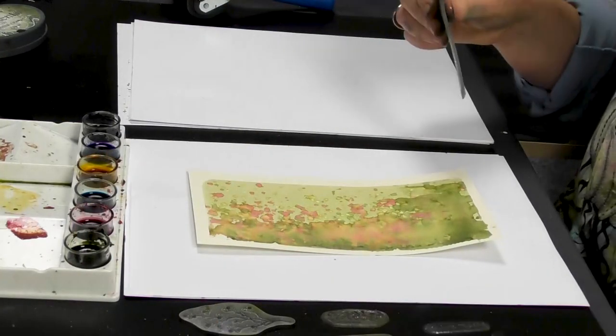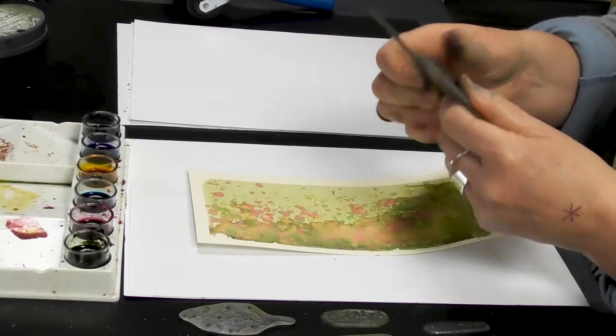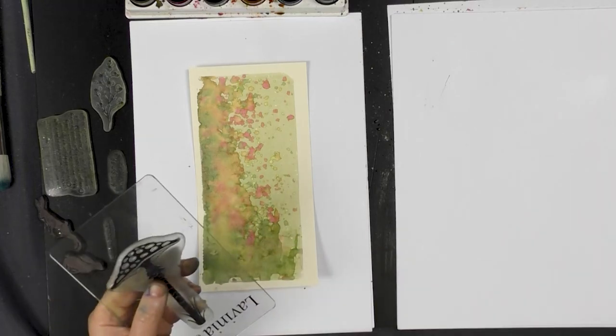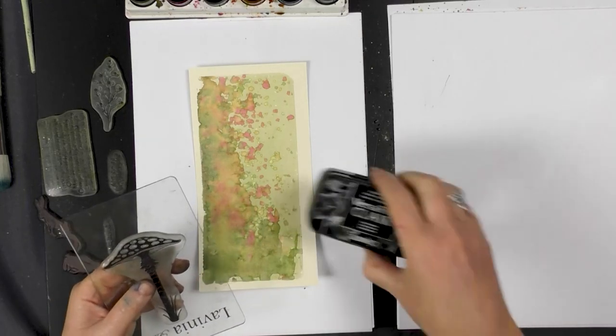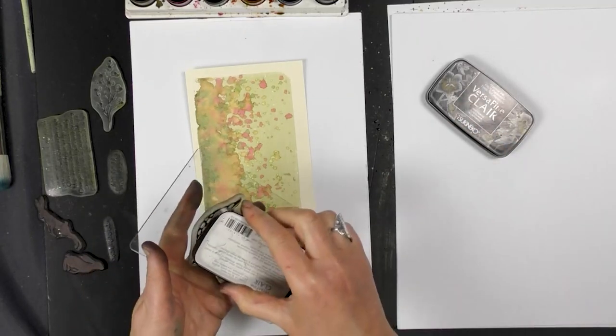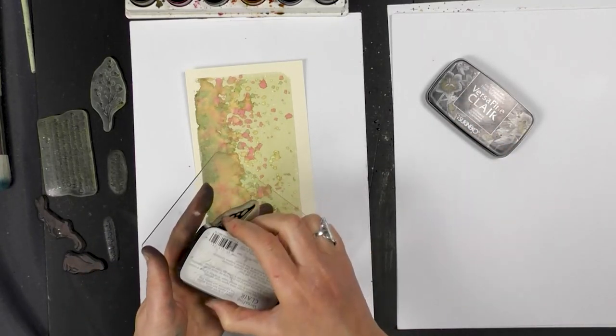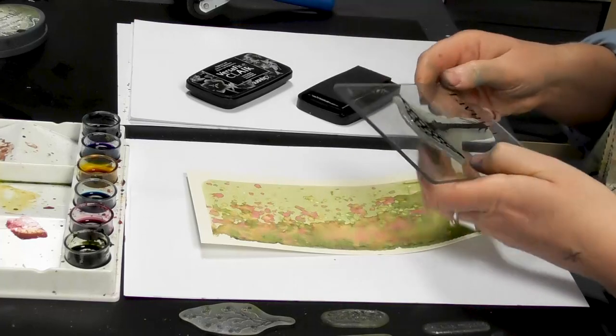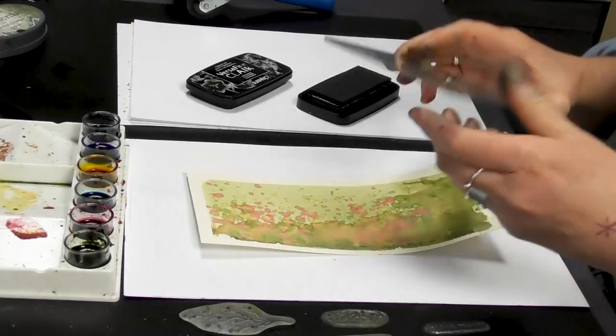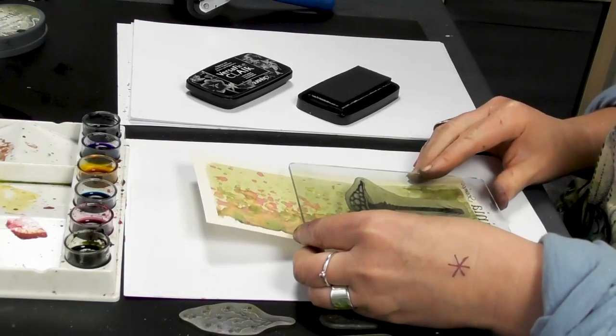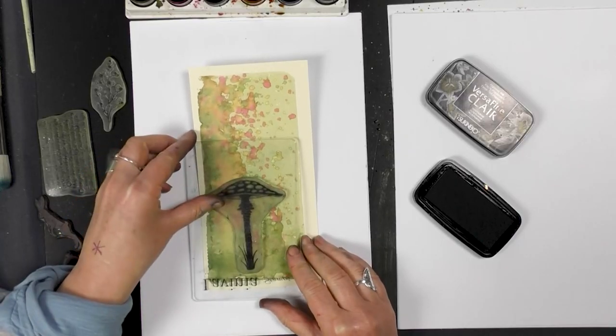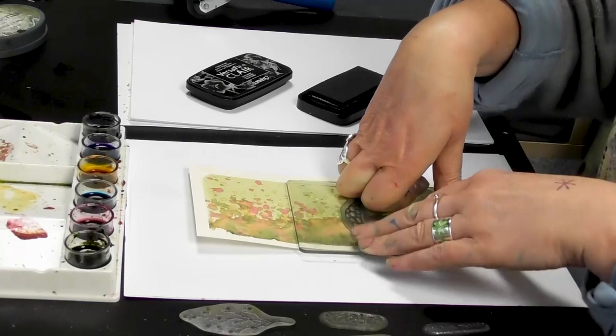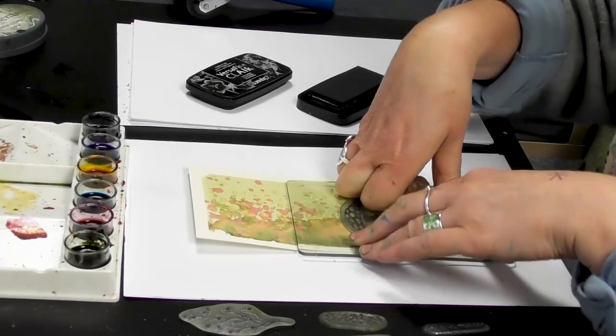I'm now taking our lovely toadstool. I'm going to ink this up in the nocturne. And let's just place that down, round about there. And give that a good press. Let it just rest a while, let it soak into the card.